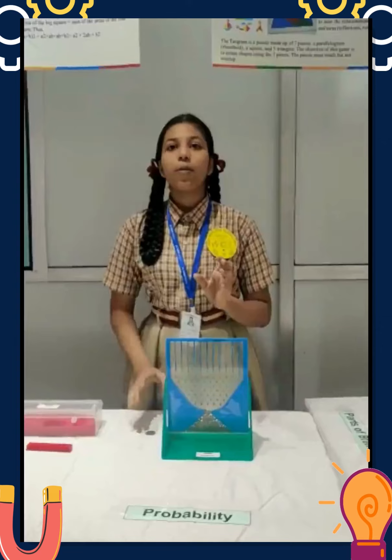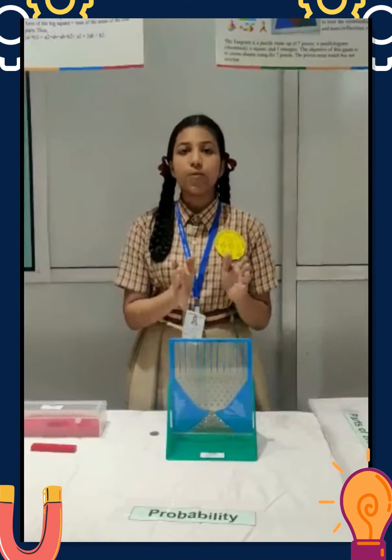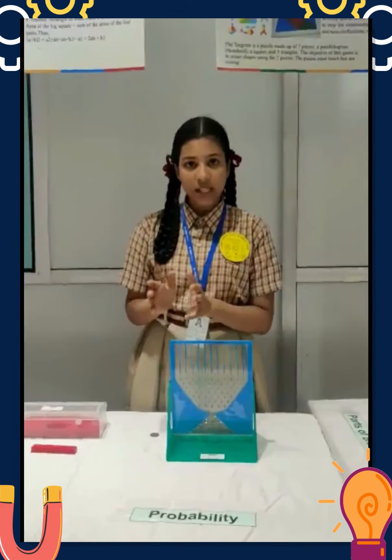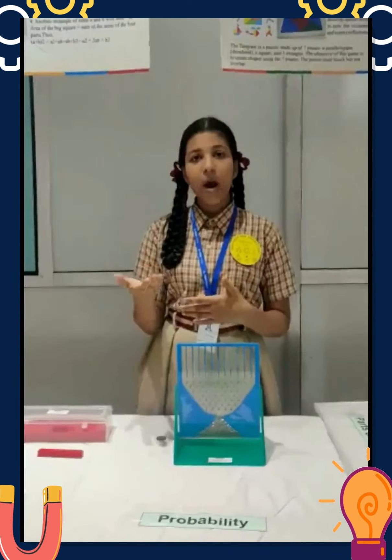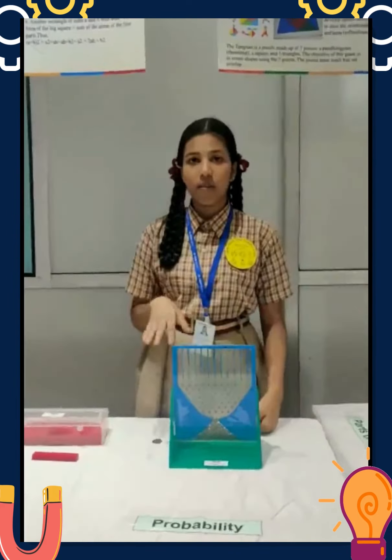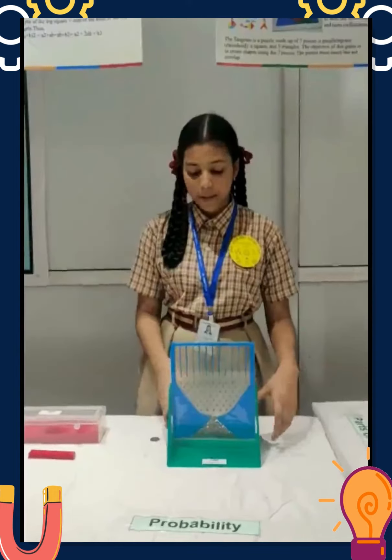There is a formula for probability. That is: probability is equal to favorable outcomes upon total number of outcomes.